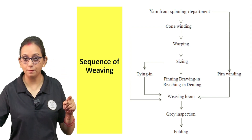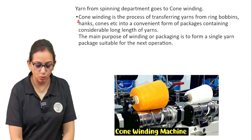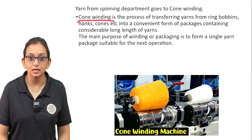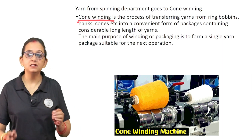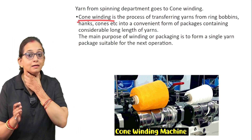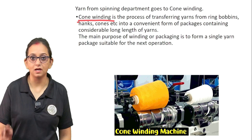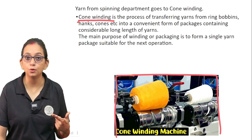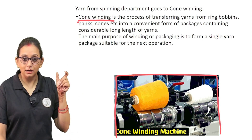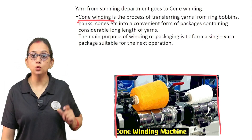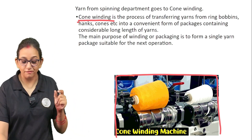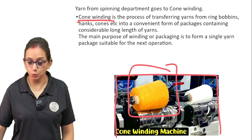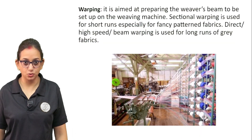First, yarn from the spinning department comes to cone winding. Cone winding is the process of transferring yarns from ring bobbins, hanks, cones, etc. into a convenient form of package containing many lengths of yarns. The yarns from the big ring bobbins are now being converted and wound onto cones to make a single yarn package, which will then go to the suitable next operation.